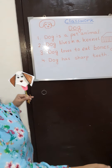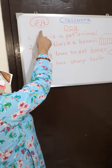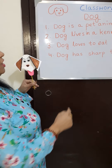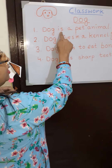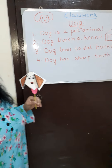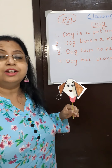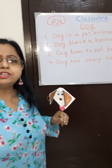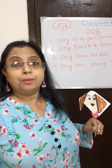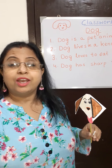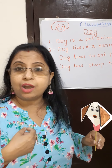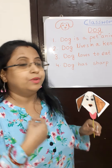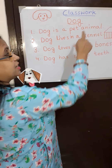Now, see I have already drawn a dog for you, and I have written some points on dog. Let's see — dog is a pet animal. What is a pet animal? A pet animal is that animal which we can keep in our houses, with us at home. That is called a pet animal.